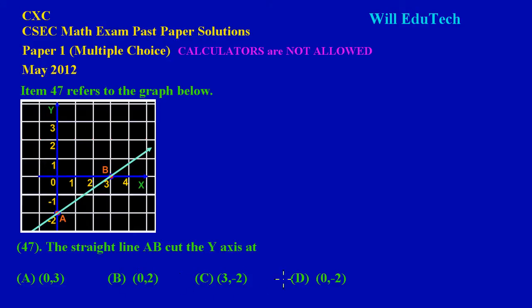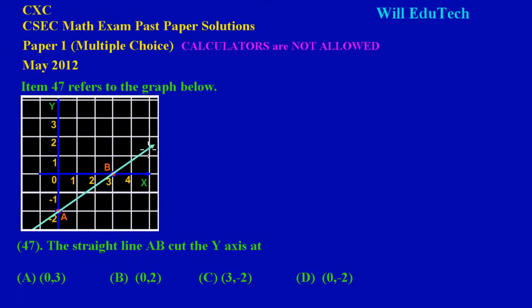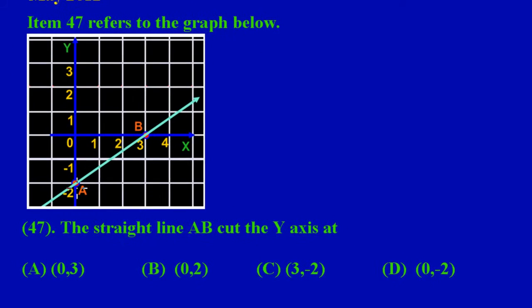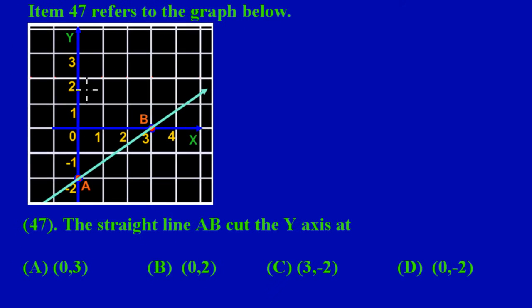Really, what they're asking us is to choose the coordinate at which the straight line AB cuts the y-axis. We know that the vertical line is the y-axis, so I'm going to position myself at point A, because that's where the line passes through the y-axis.